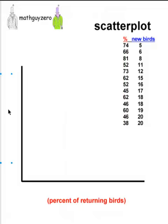We're going to label our response variable, the y-axis, as the number of new birds that have joined the flock.